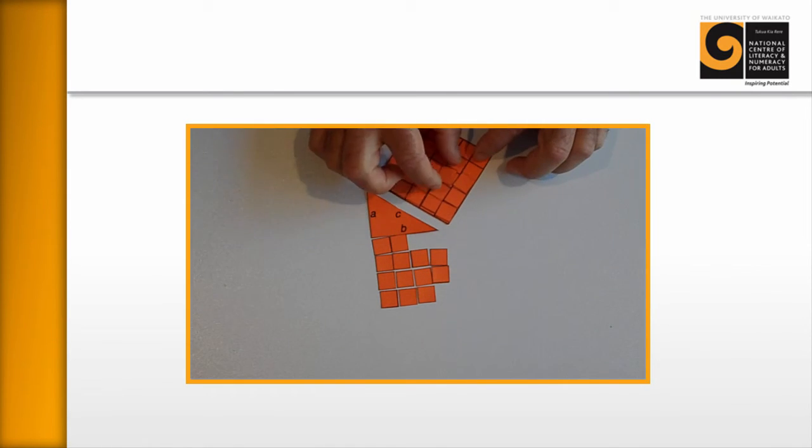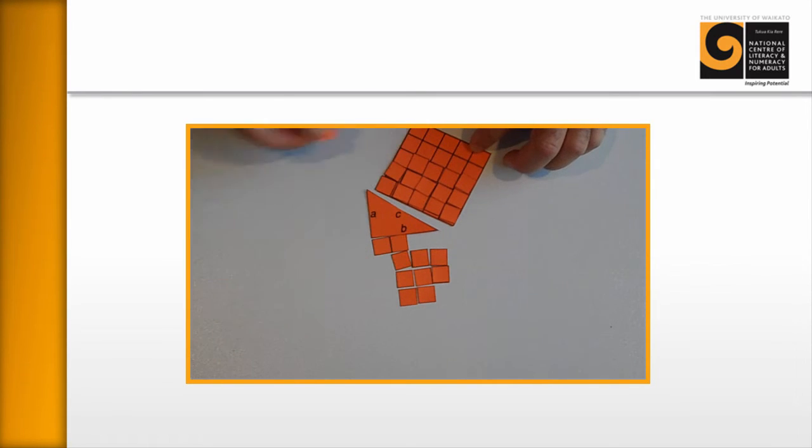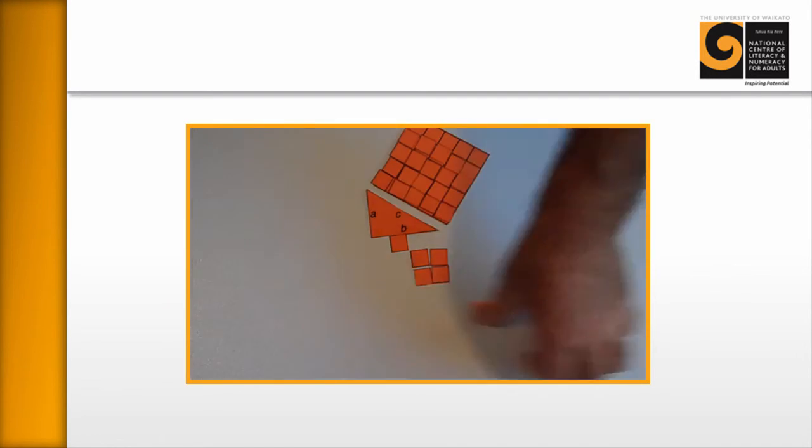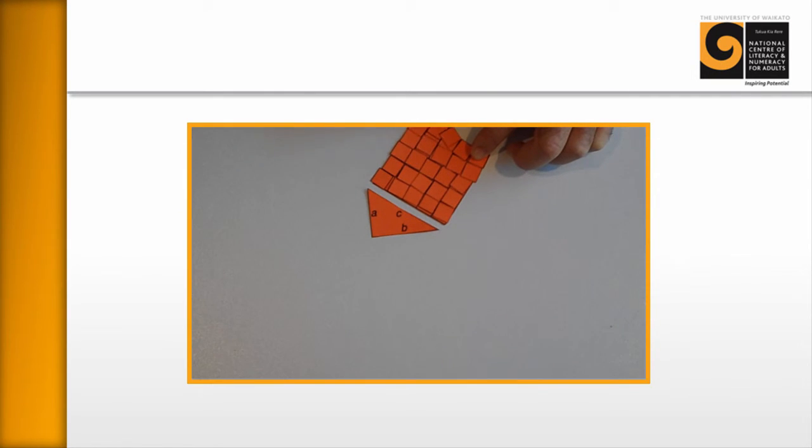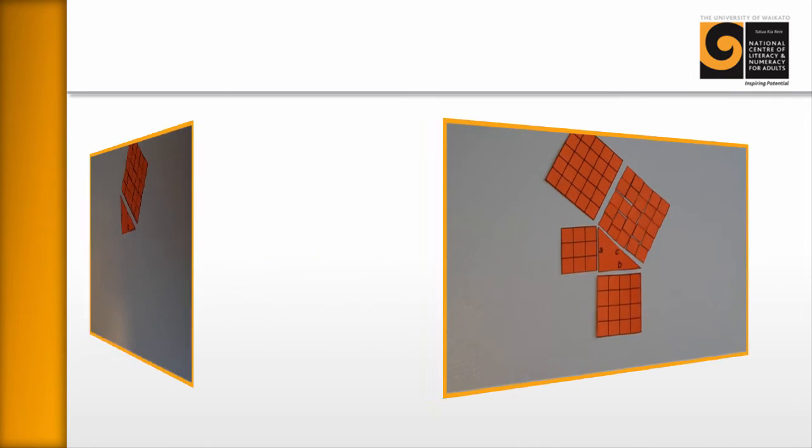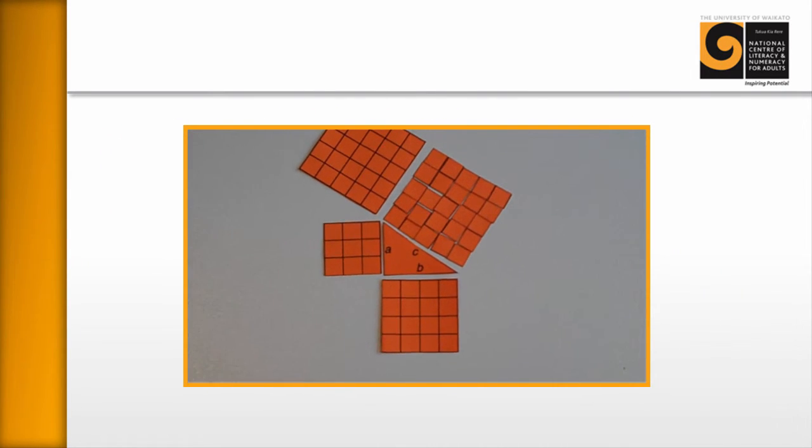And the idea is that they fit perfectly. And so the learners are proving to themselves that a squared plus b squared really does equal c squared, so they don't have to take it just as a matter of authority or a matter of faith, but they can really see that it actually does work. It takes a while, but it's well worth it. And as you can see there, they do fit perfectly.